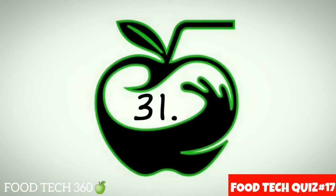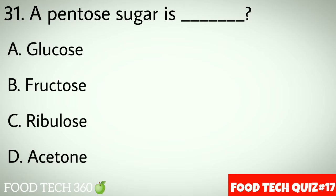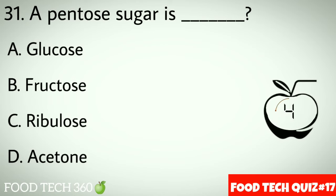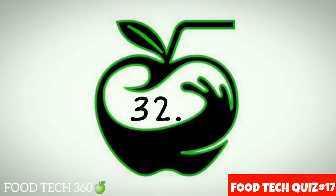Question number 31: A pentose sugar is dash. Options: A. Glucose, B. Fructose, C. Ribulose, D. Acetone. Correct answer: C. Ribulose.